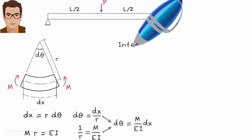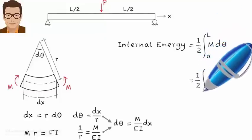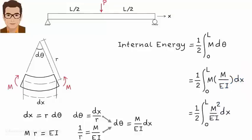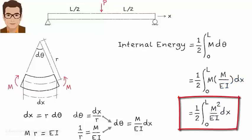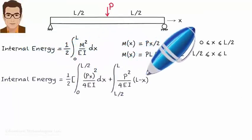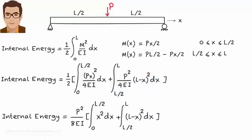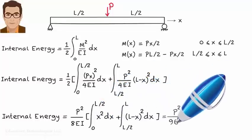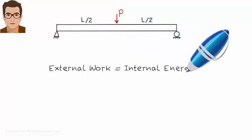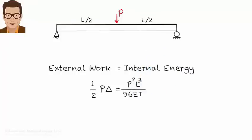Now we can substitute dθ = (m/EI)·dx into the internal energy expression. Assuming a constant EI for the beam, the total internal energy simplifies accordingly. Therefore, the expression for the work energy principle becomes: one-half P·delta equals the integral of m²/(2EI) dx. We can use this equation to determine delta.